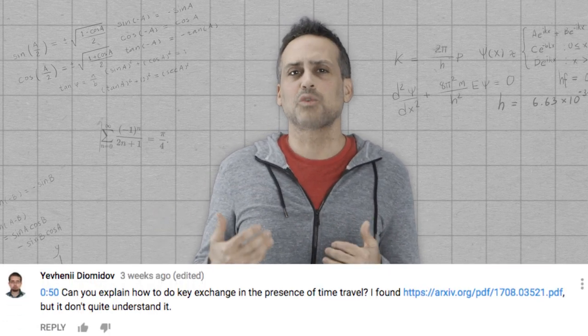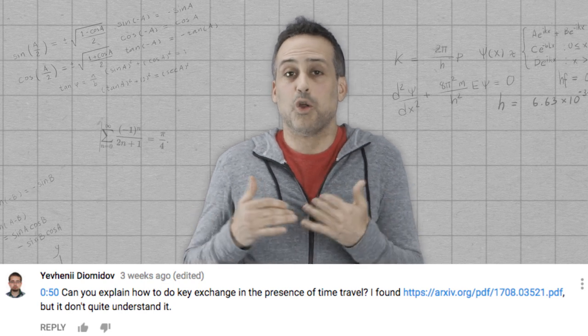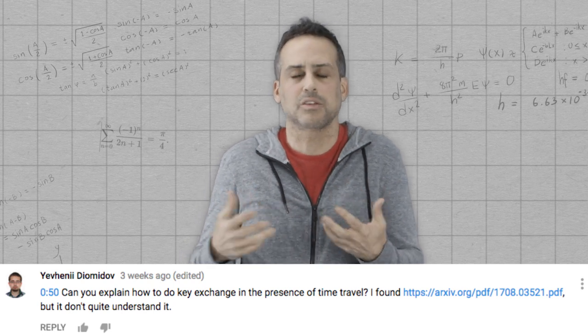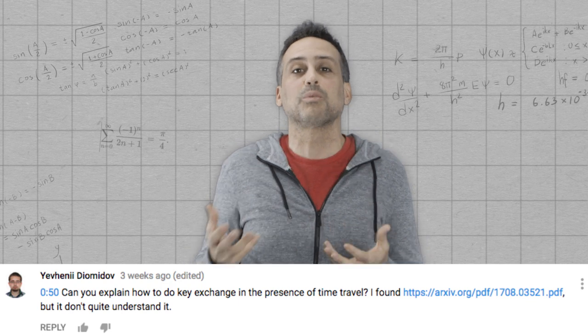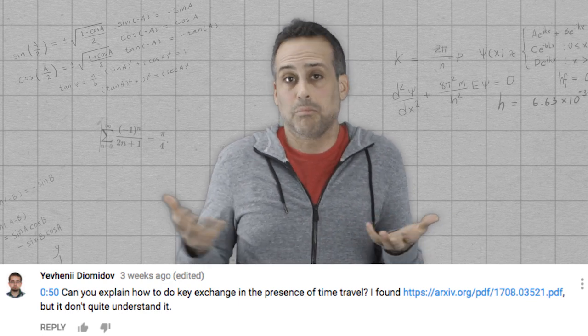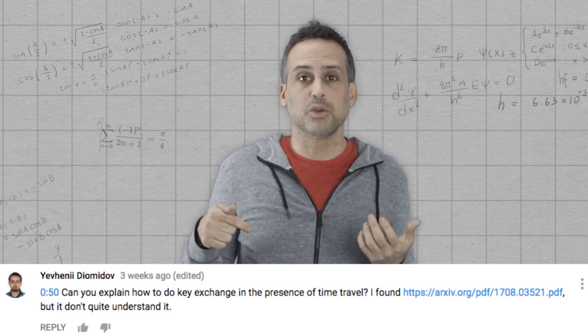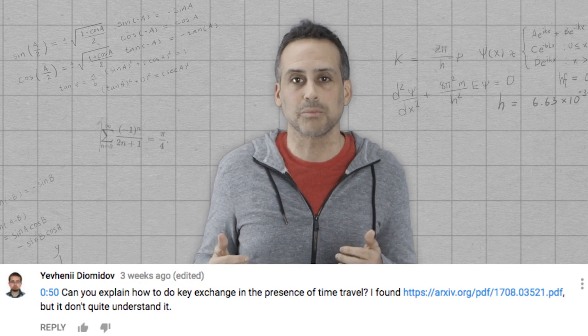Yevheniy Diyamidov asked what key exchange would look like in a world with time travel. I don't know anything about that, but he pointed us to a paper on the archive that seems to talk about this stuff, just not as a theoretical actual possibility about physics, but just as a toy model to explore some aspects of cryptography. It looks like it's a perfectly real paper. So if you look below, you should see in his comment the link, the archive link to that paper. Check it out if it's something you're interested in.